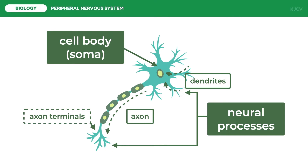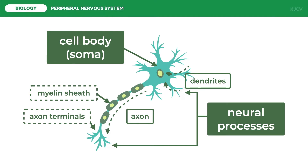Myelination increases the speed of conduction of action potentials. Myelinated fibers are axons covered in myelin, a thick layer composed primarily of lipids, at regular intervals along their length. Because the water-soluble ions responsible for carrying current across the membrane cannot permeate this myelin coating, it acts as an insulator — just like plastic around an electrical wire — to prevent leakage of current across the myelinated portion of the membrane.